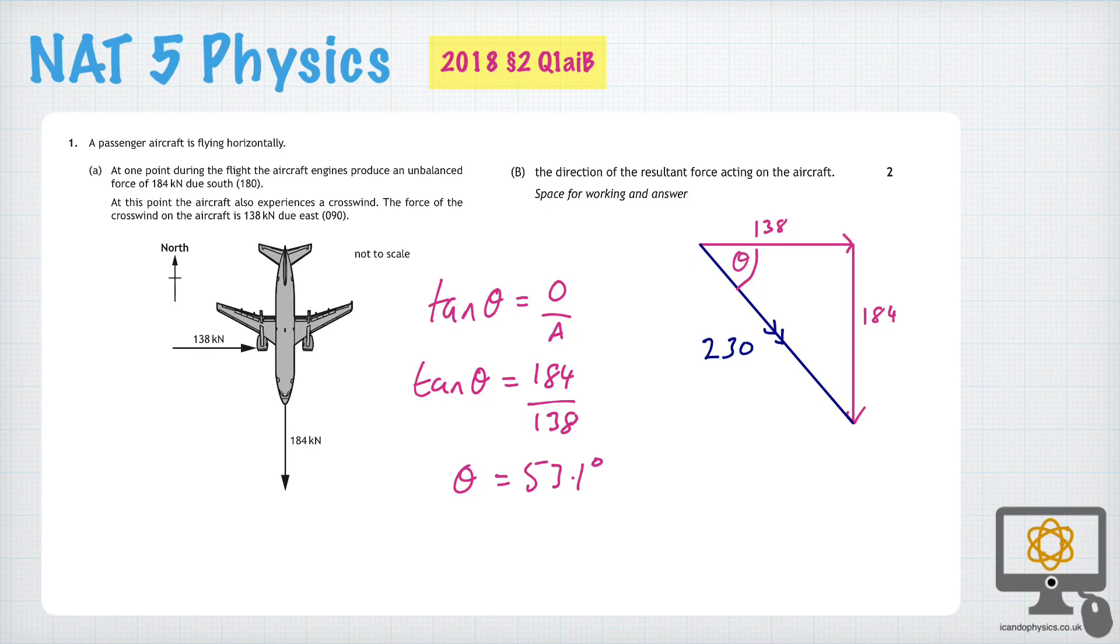Now given that this is a bearing from north, what we're going to have to do is draw a north arrow here. So that's north. And actually what we need to do is to determine what is the total bearing from north. Well, we know that this angle here is 90 degrees. And we've just determined that the angle theta is 53.1 degrees.